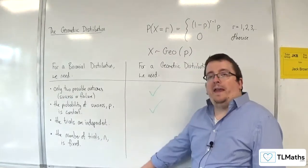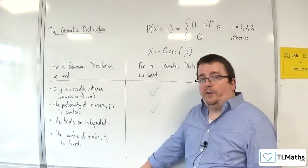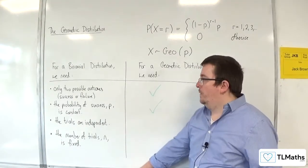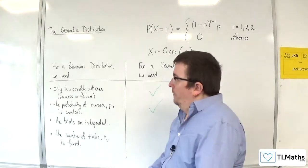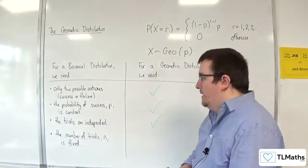The trials are independent. If they weren't for the geometric, then we would have the issue of the probability changing. For binomial and geometric, we need the trials to be independent.